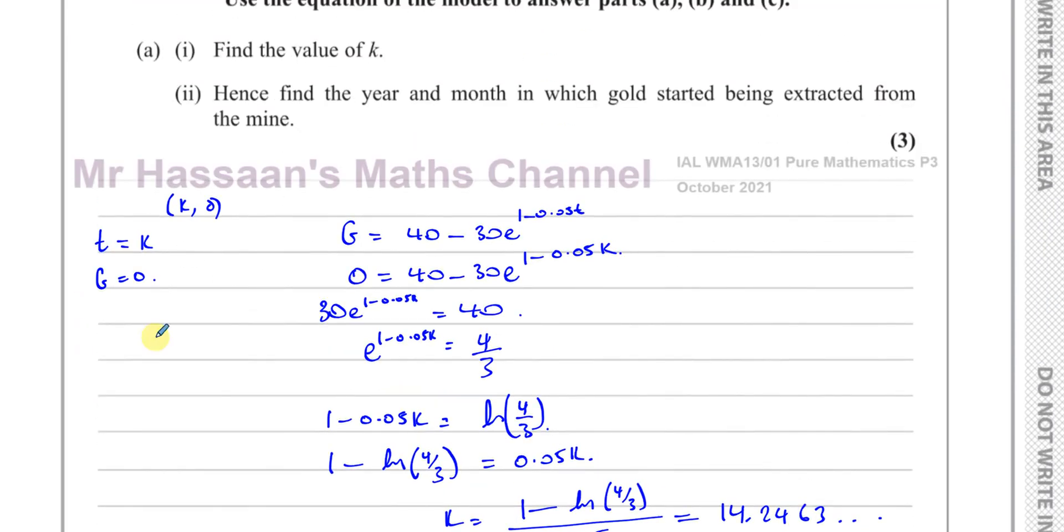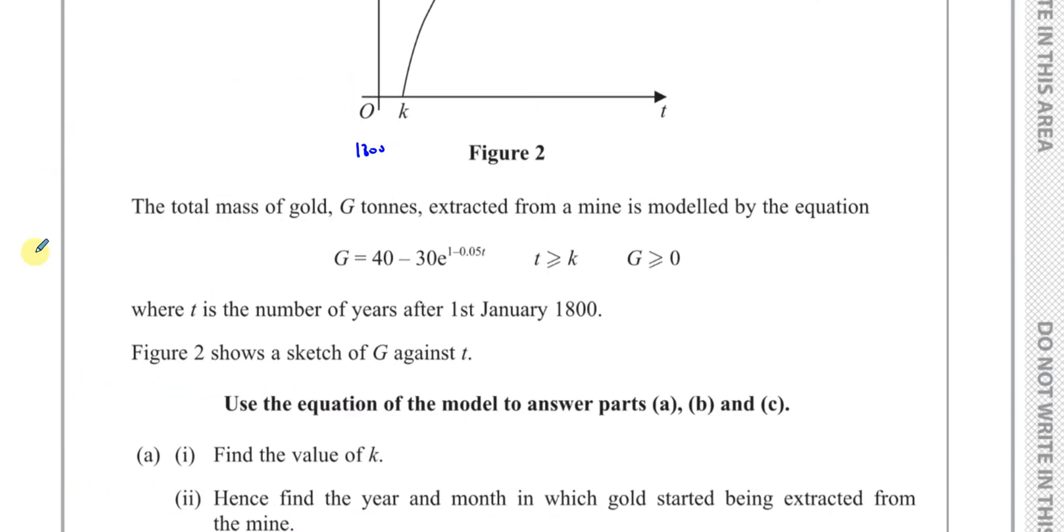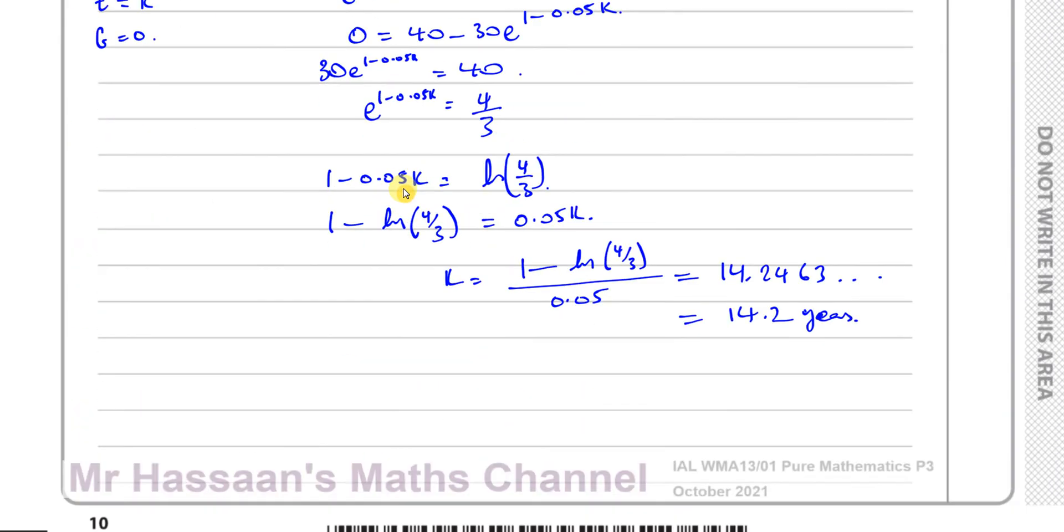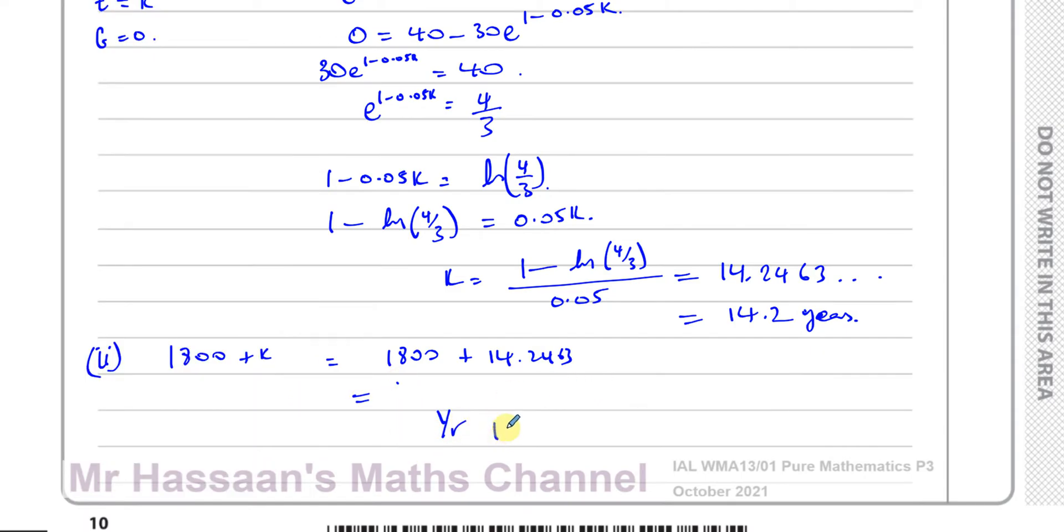And then it says hence, find the year and month in which gold started being extracted from the mine. Well, if k is 14.2 years, then it's 14.2 years after 1800. So it's going to be 1800 plus k, which is 1800 plus 14.2463. Let's put this in the exact form. So if I take this value here and I add 1800 to it, that gives me the year is 1814. So we can say the year is 1814.